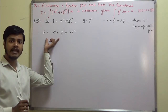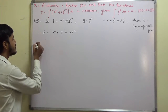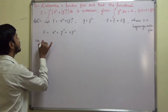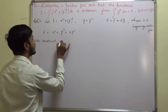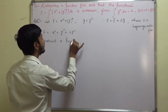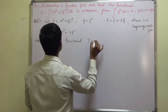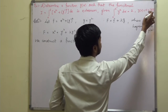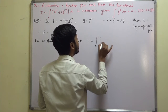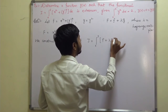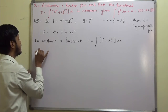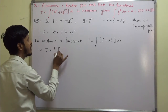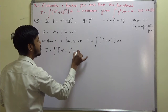Once you have written F, you can construct the functional. Therefore we construct a functional J equal to the integral from 0 to 1 of (f plus lambda g) dx. That is, J equals the integral from 0 to 1 of (x squared plus y-dash squared plus lambda y squared) dx.